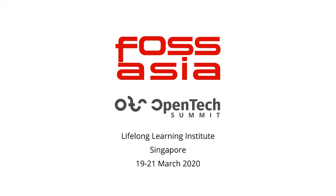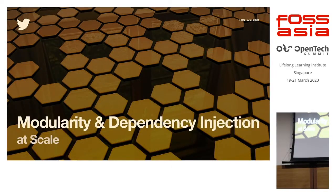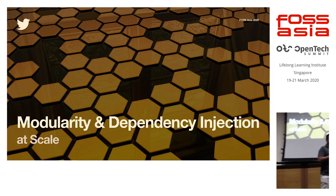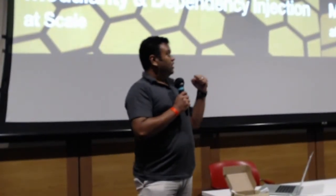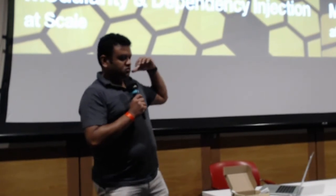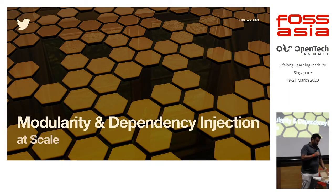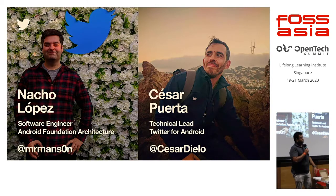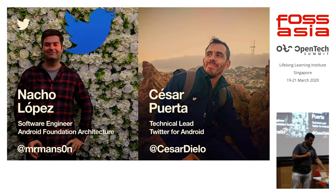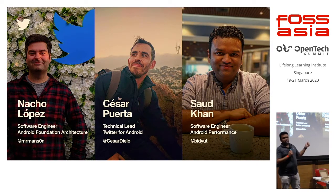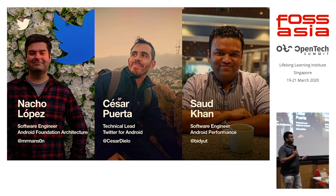Today I'm talking about modularity and dependency injection at scale. This is mostly based on the Twitter Android app. I'll try to elaborate on anything that goes into detail about Android, but mostly it's about dependency injection and the things we've dealt with over the years. This work is from Nacho and Cesar, who have been working on it for the last few years. I'm Saud, a software engineer at Twitter working on Android, mostly focused on performance.